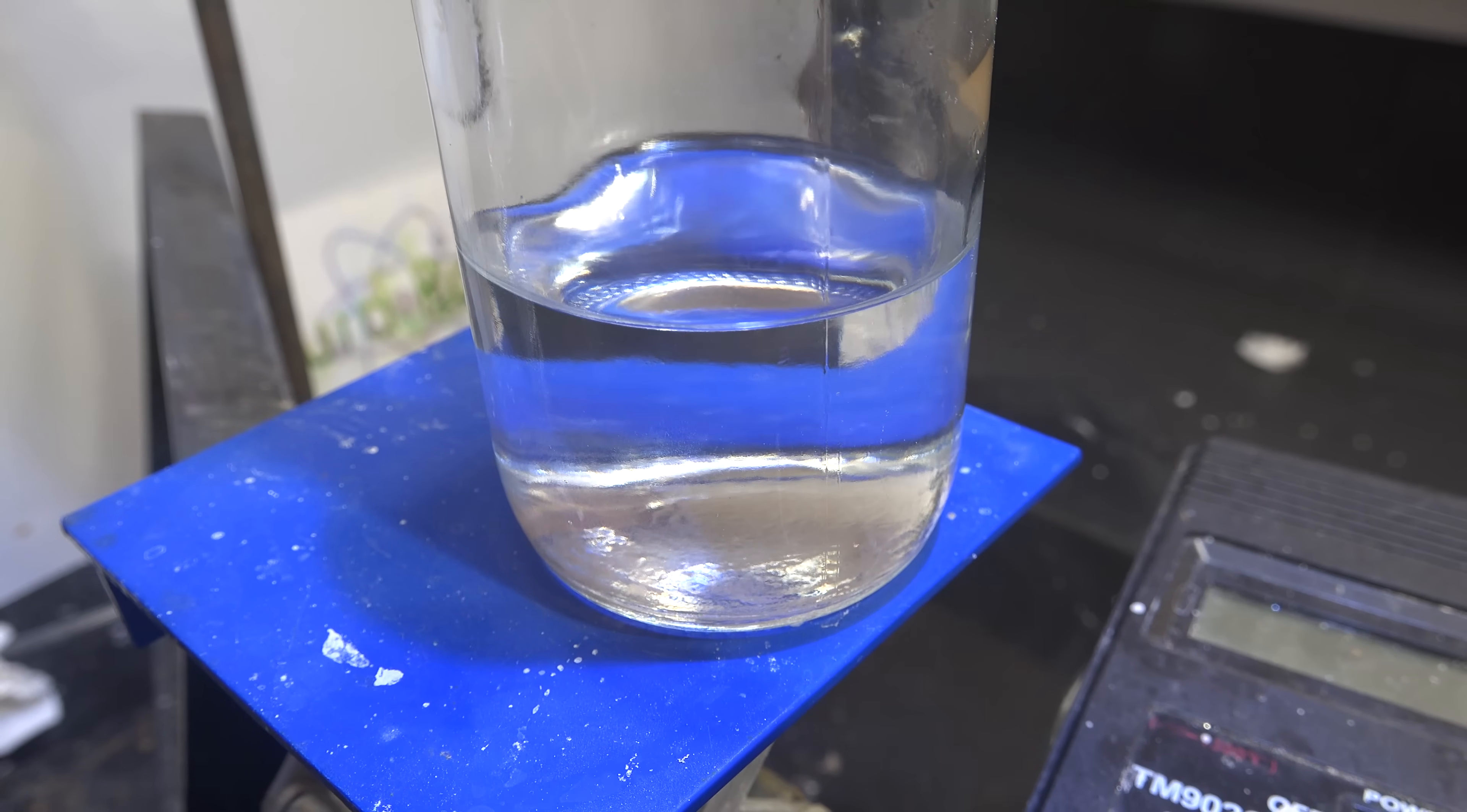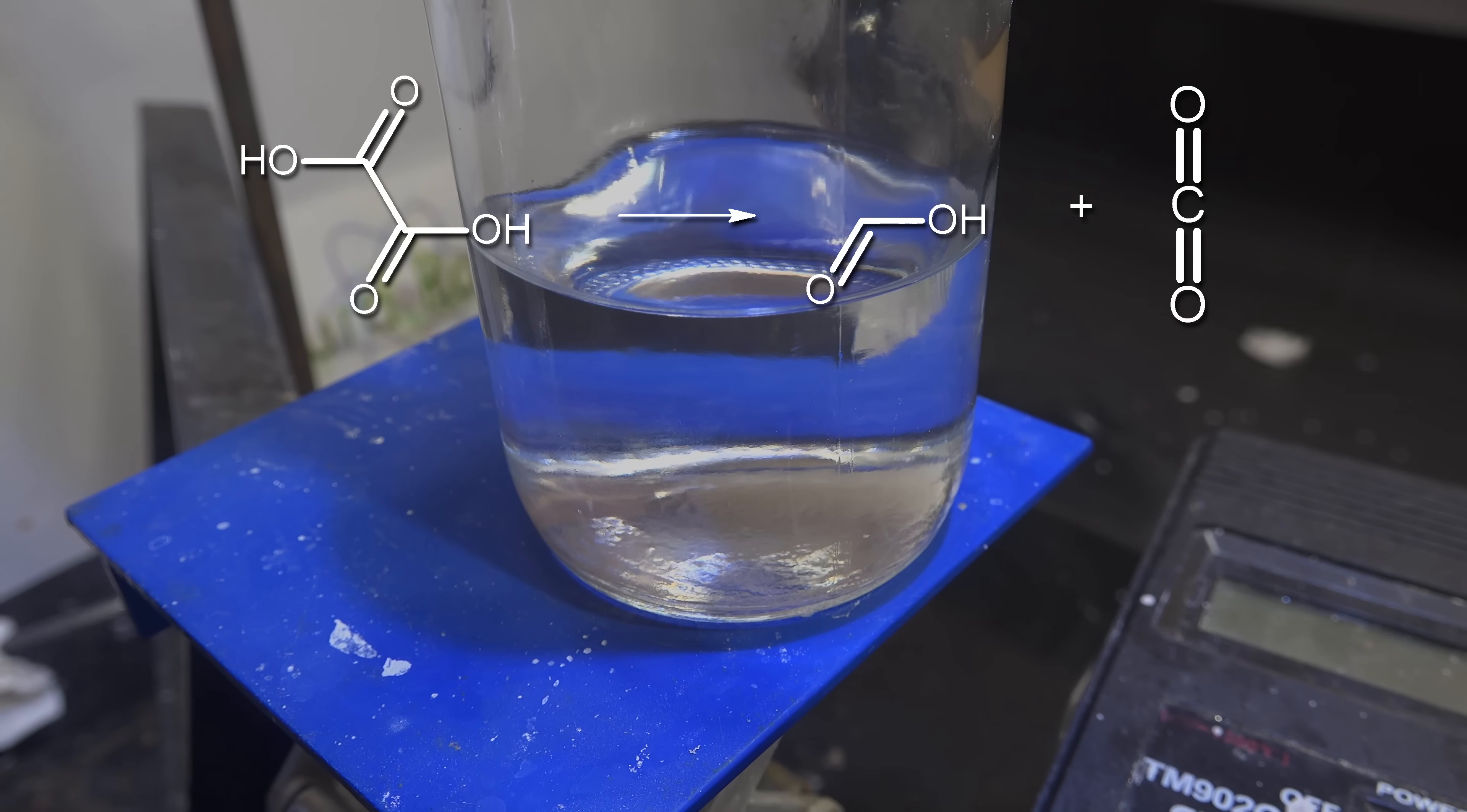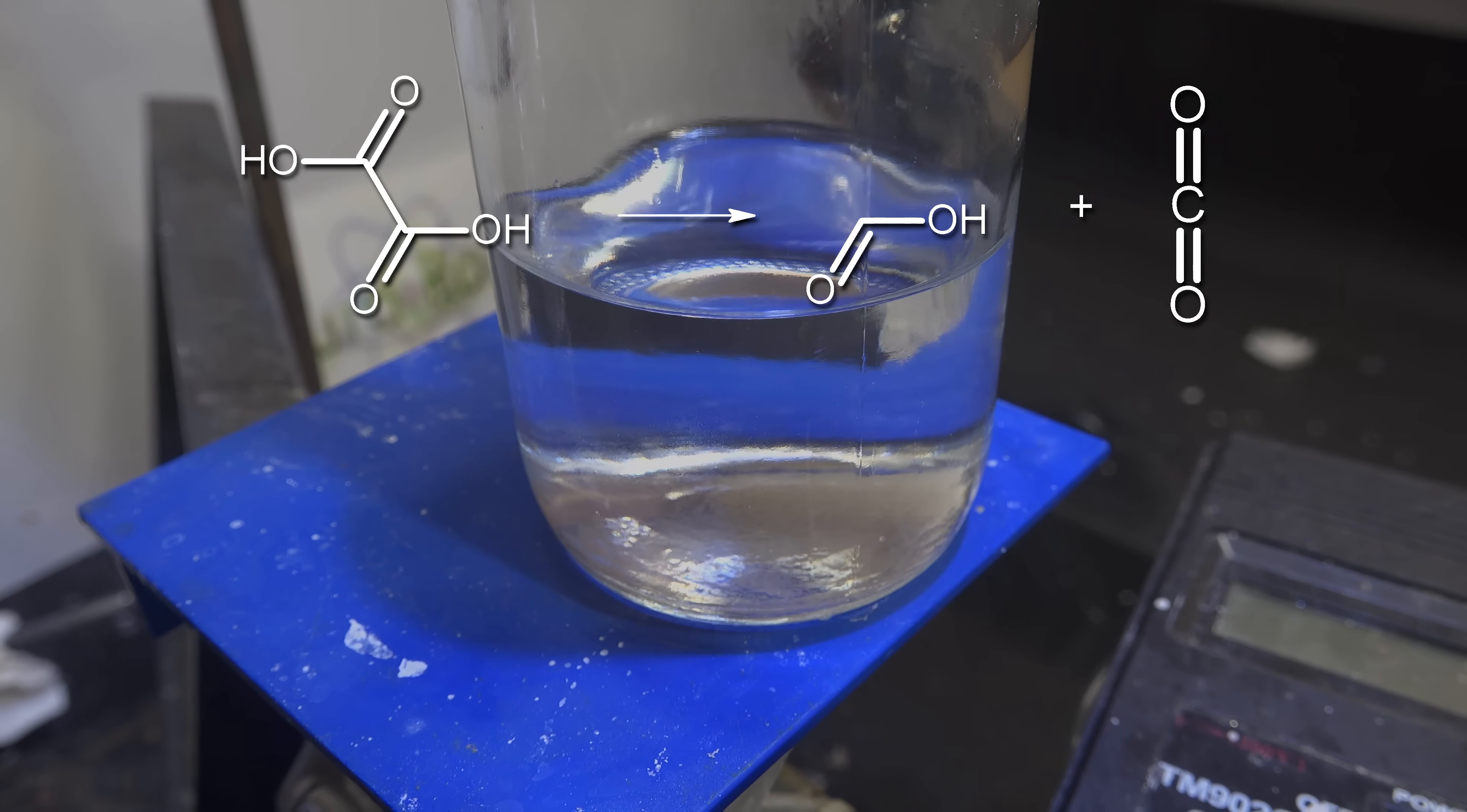In this video we'll make formic acid from glycerol and oxalic acid. The overall idea is that oxalic acid is essentially formic acid with carbon dioxide in it. So we're going to break that off by heating.